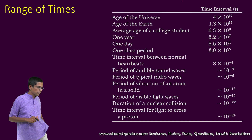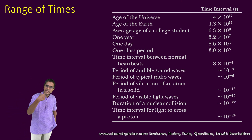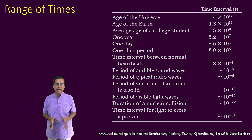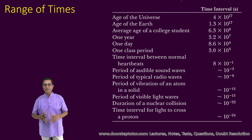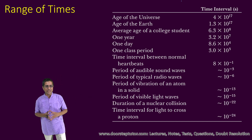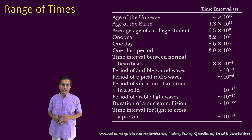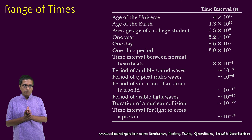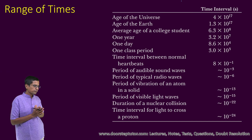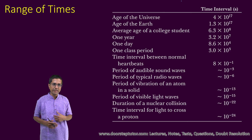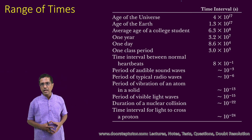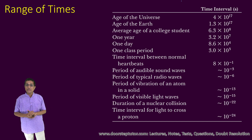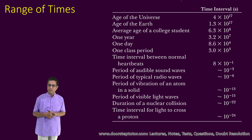Now that we understand what our one second really means — Martians might use a completely different one second, but for us that is what it means — we can describe the various ranges of time. The ranges of time are very large, from the age of the universe which is of the order of 10 to the power 17...